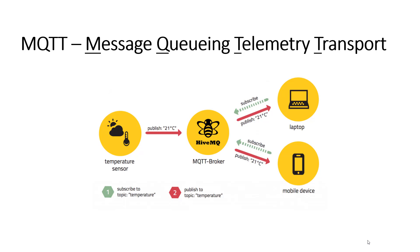MQTT stands for Message Queuing Telemetry Transport. MQTT is a publish-subscribe message transport protocol. A central service, called an MQTT broker, allows clients to either publish or subscribe to a logical grouping of devices called topics. MQTT decouples the producers of data from the consumers of data. One or more consumers have a subscription to a message topic and receive those messages, but they do not need to know details about the source of the messages.